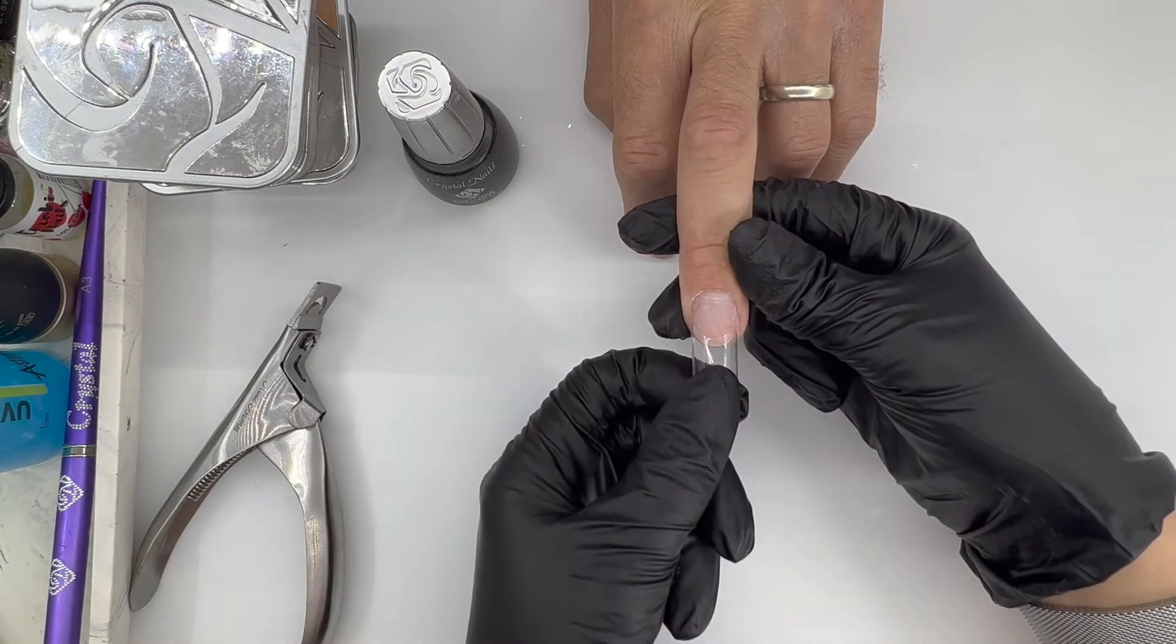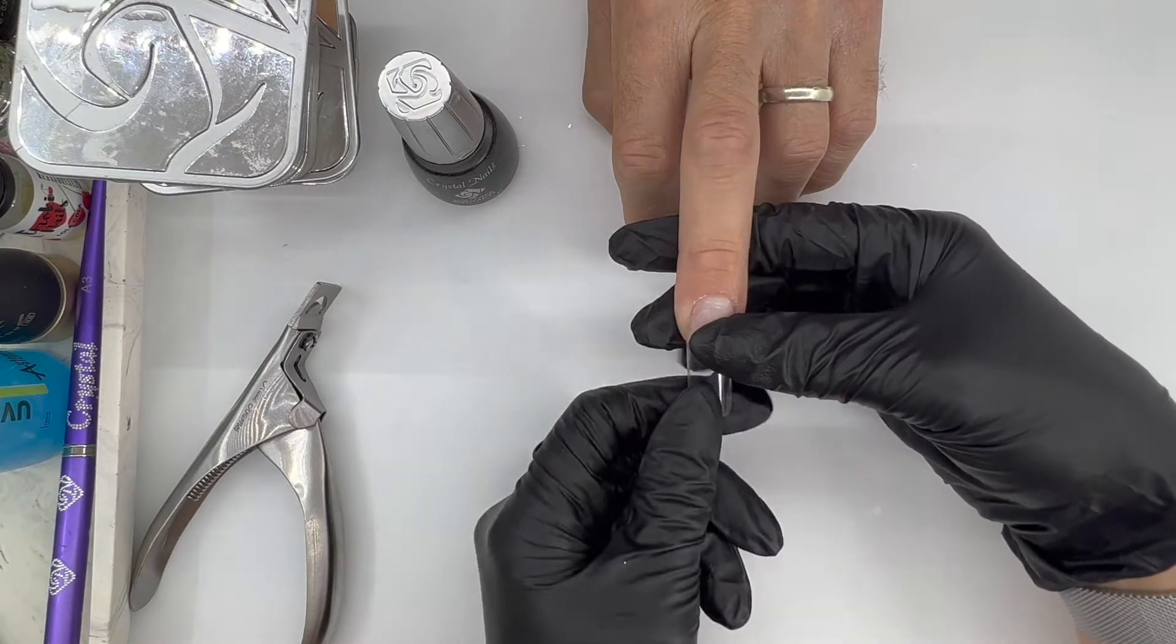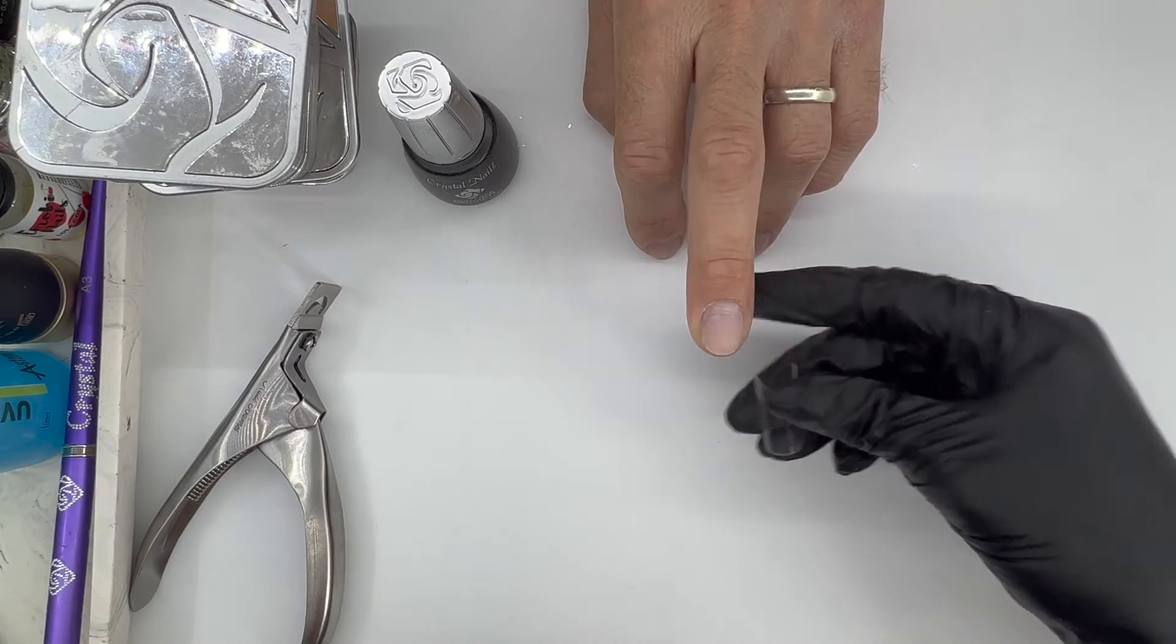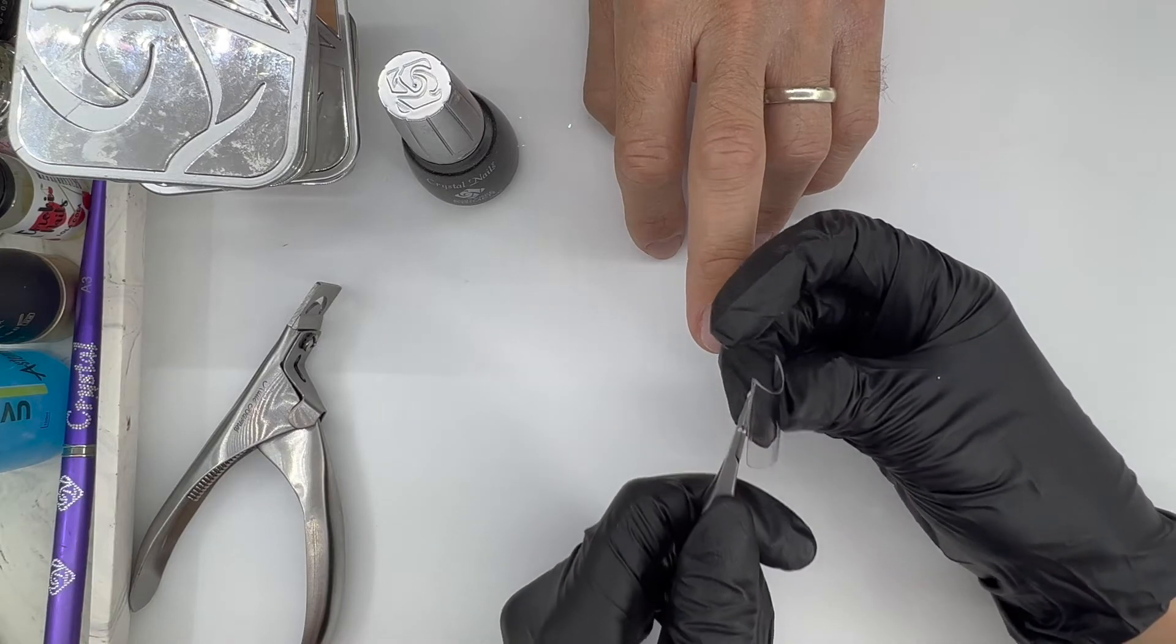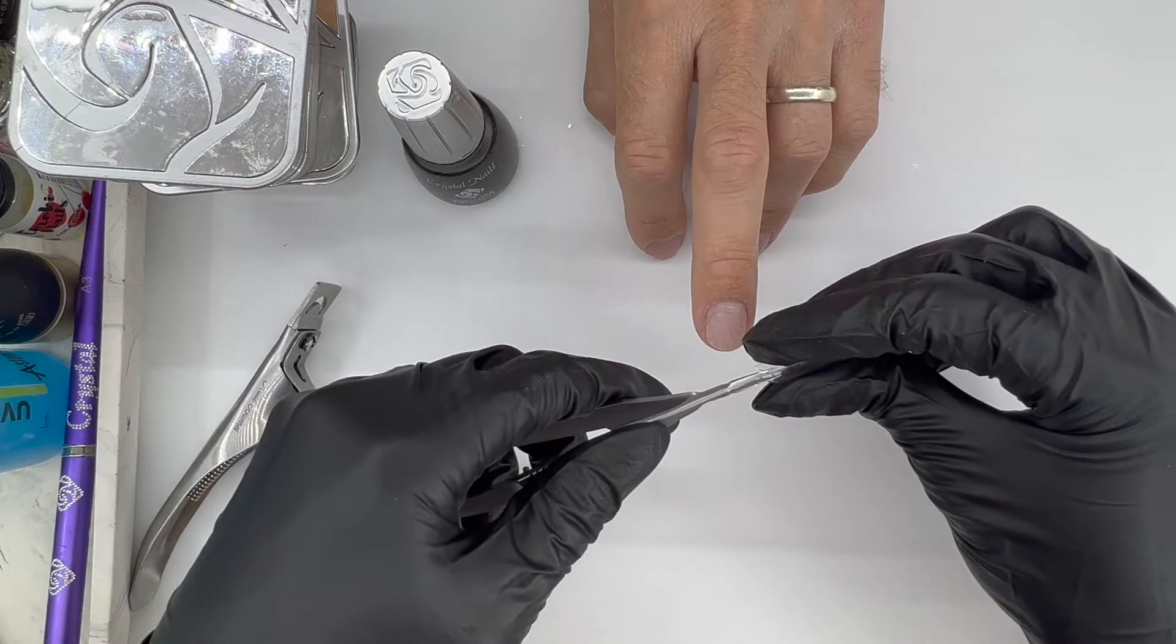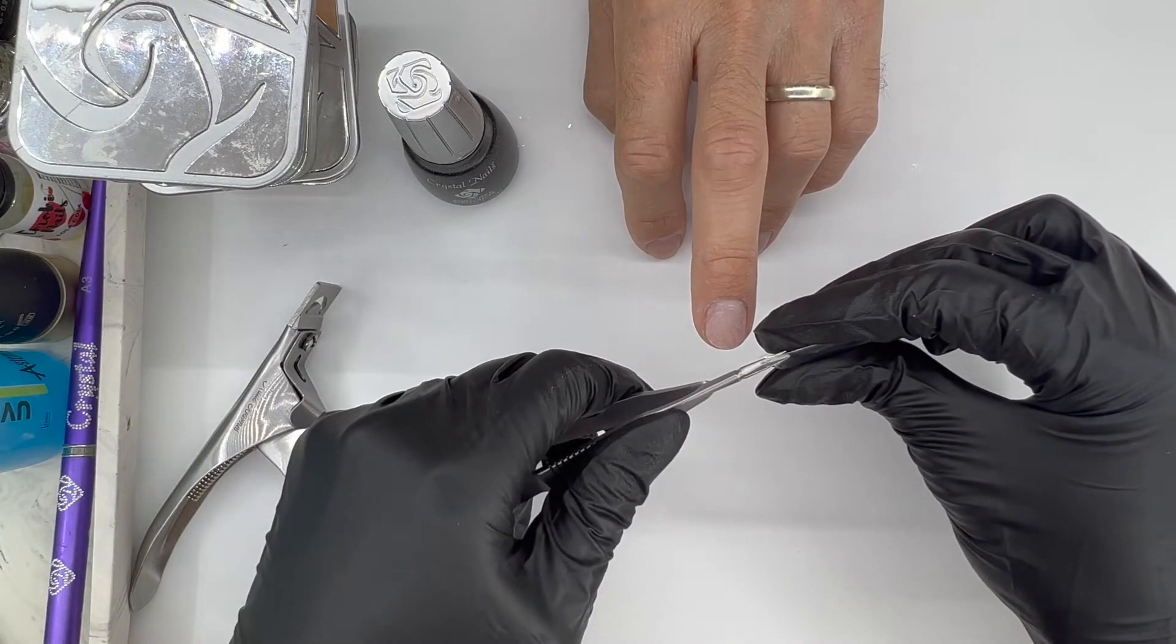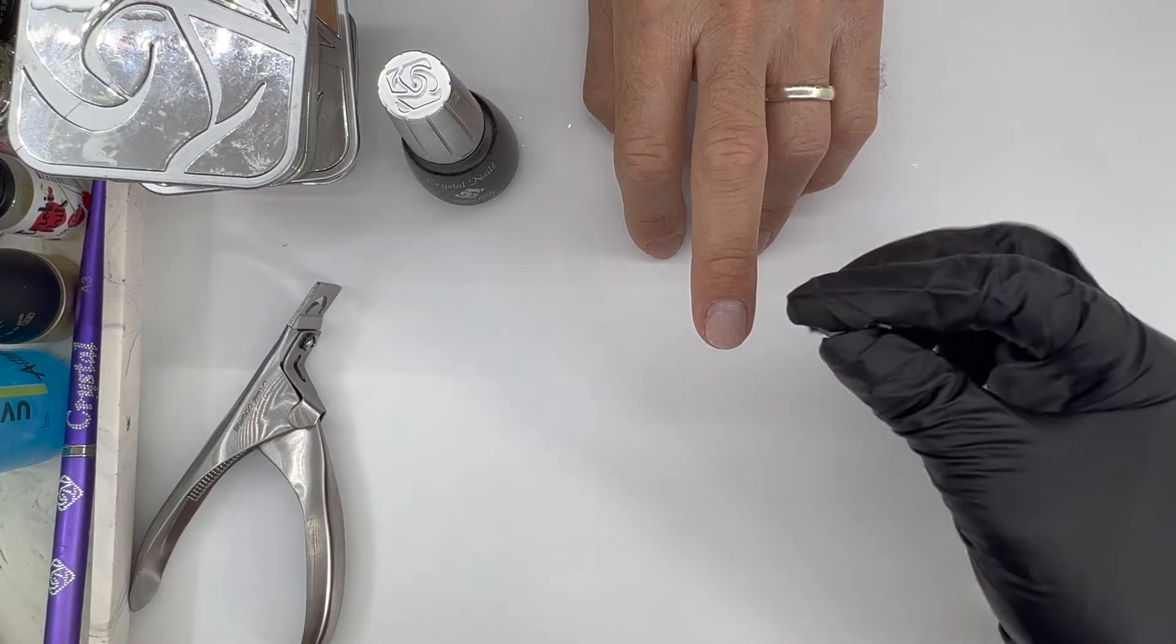So this was the nail tip that fitted. Now what you can do as well, if it is too wide as you're fitting it, you can just at this part here cut a small amount off, and then from there to the sidewall you can remove the sidewall as well.